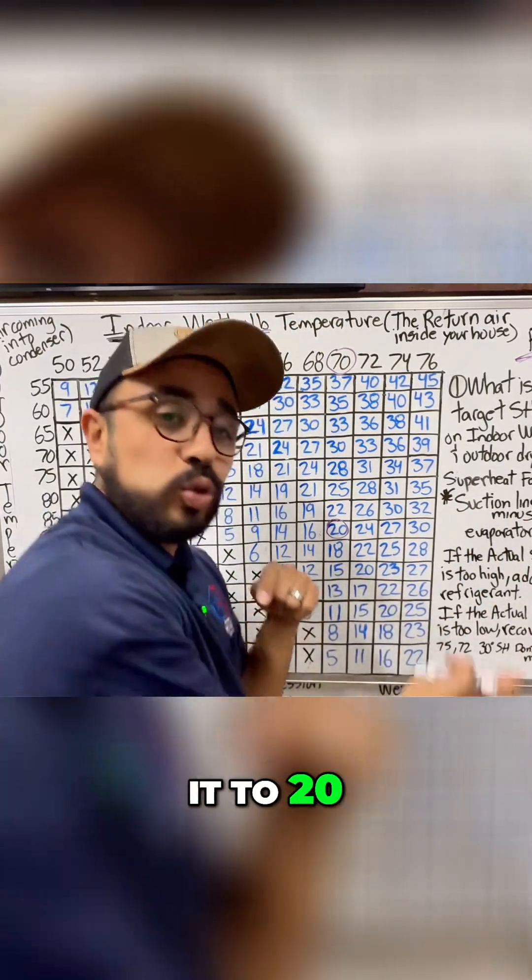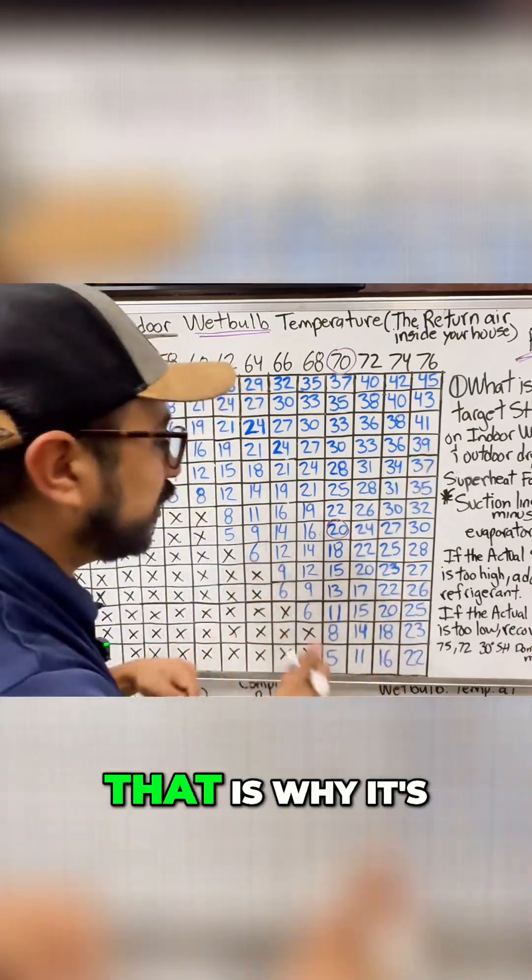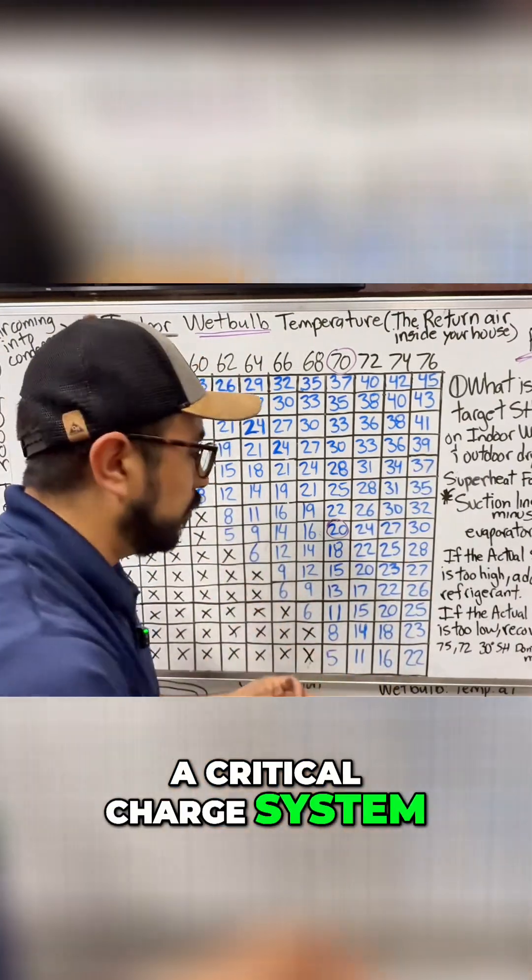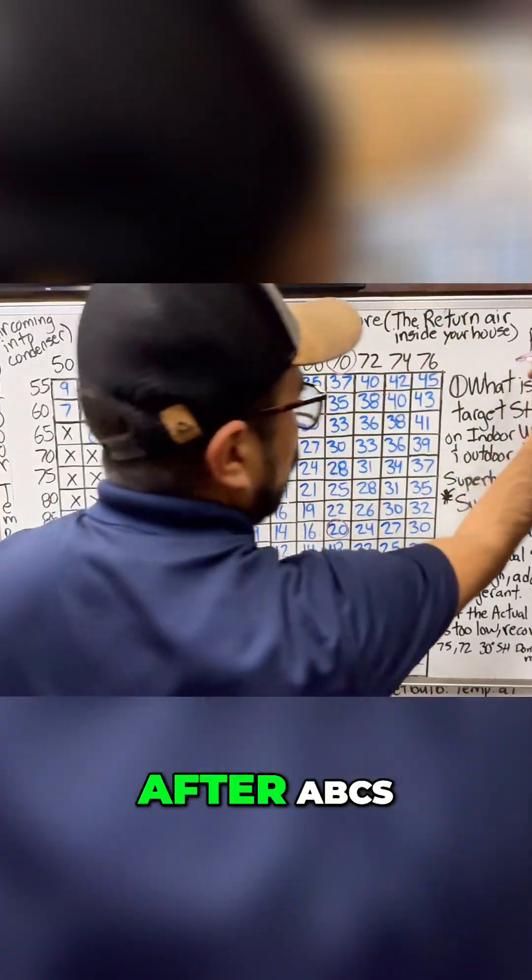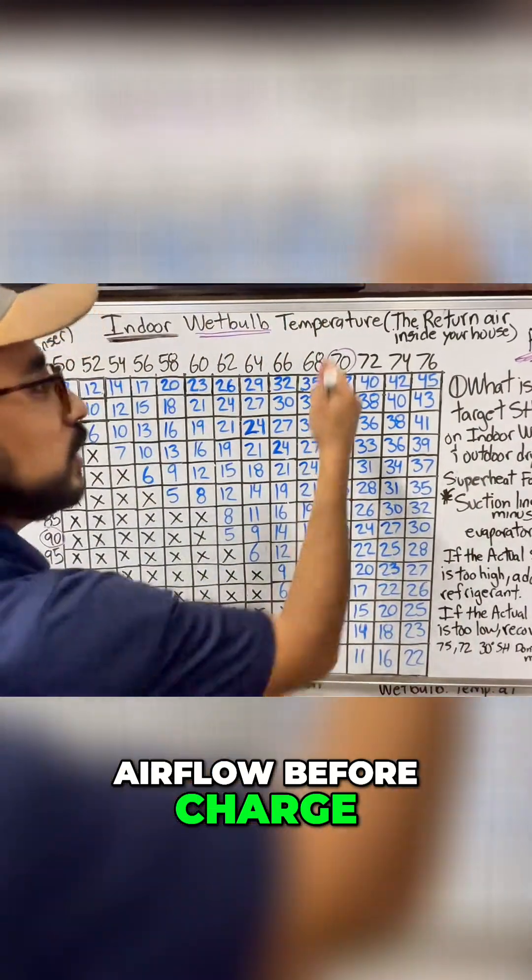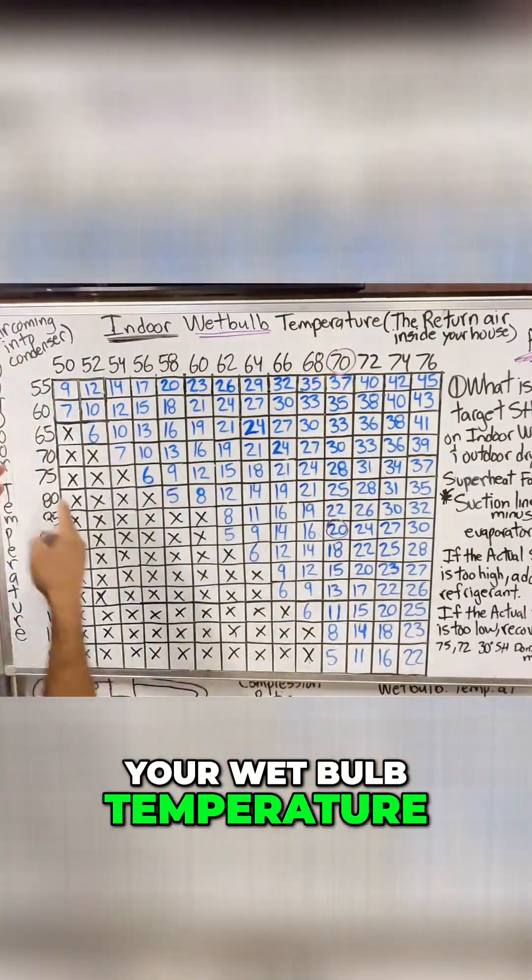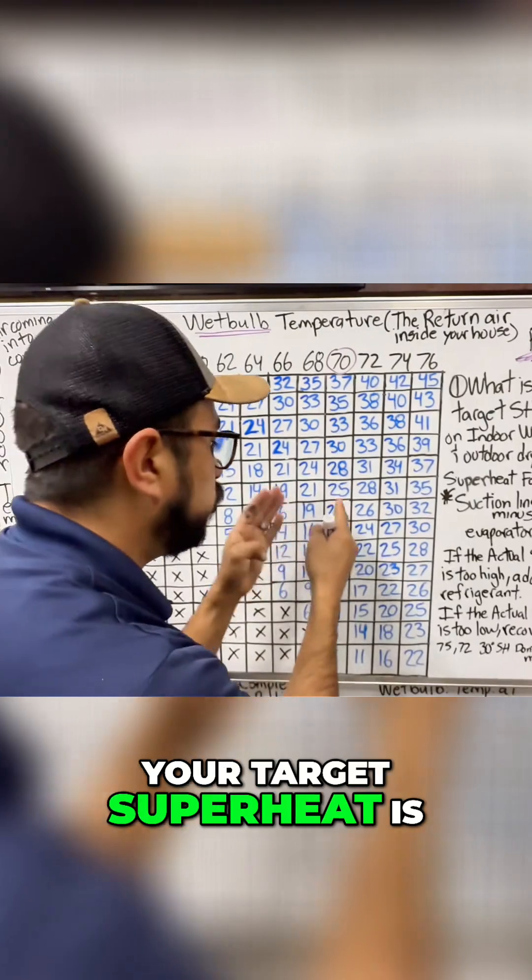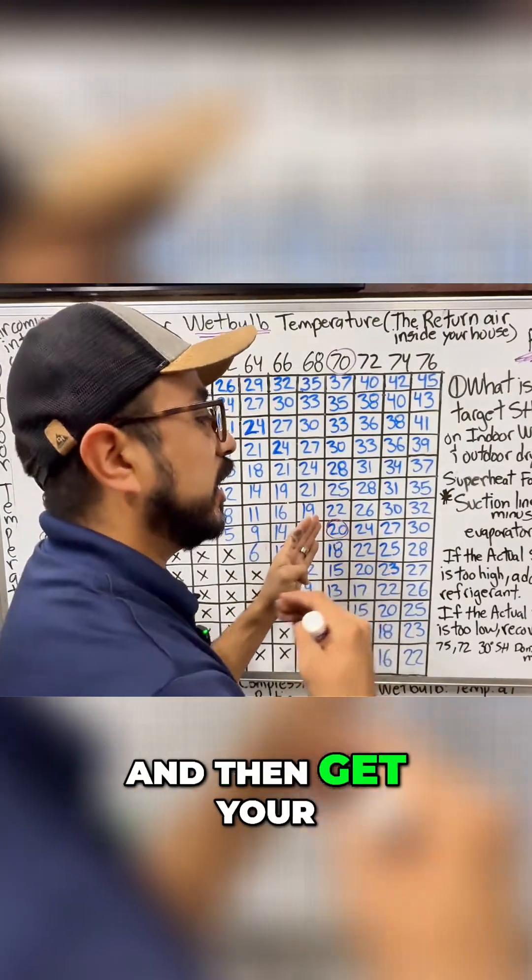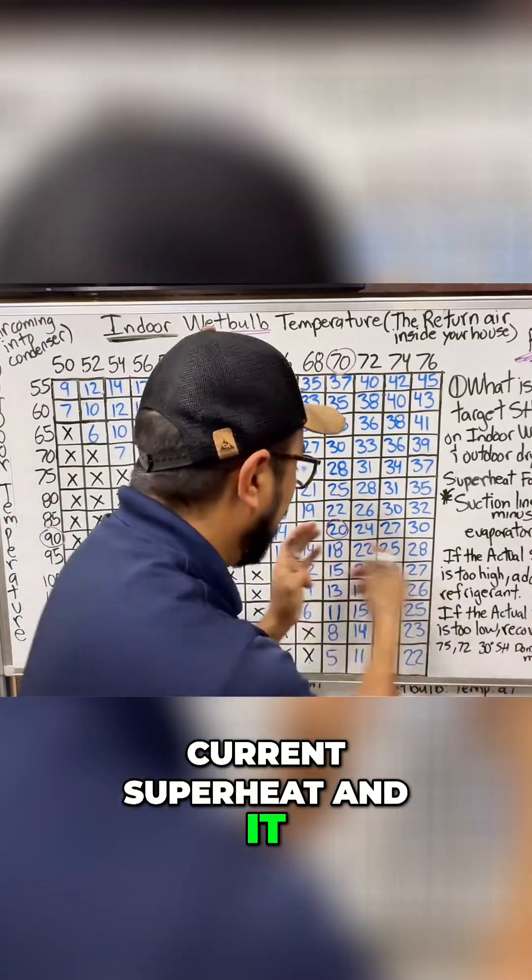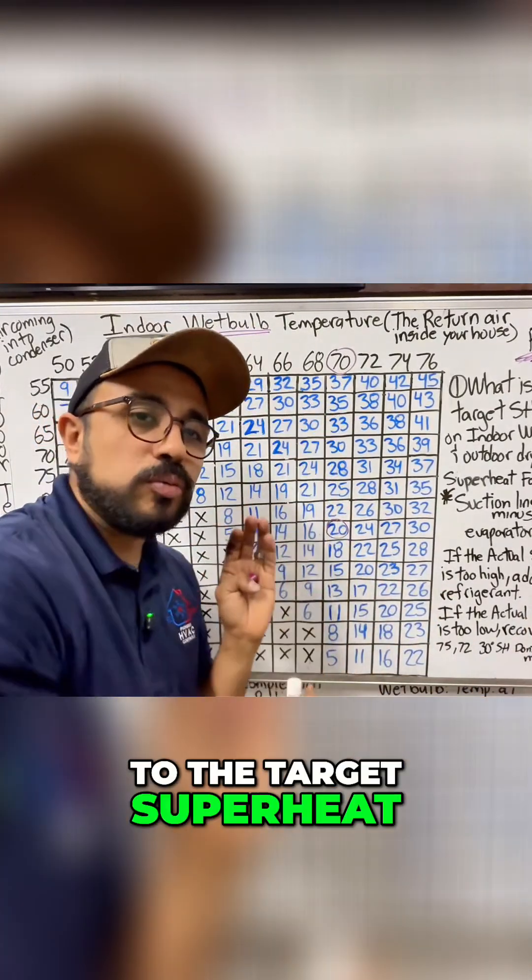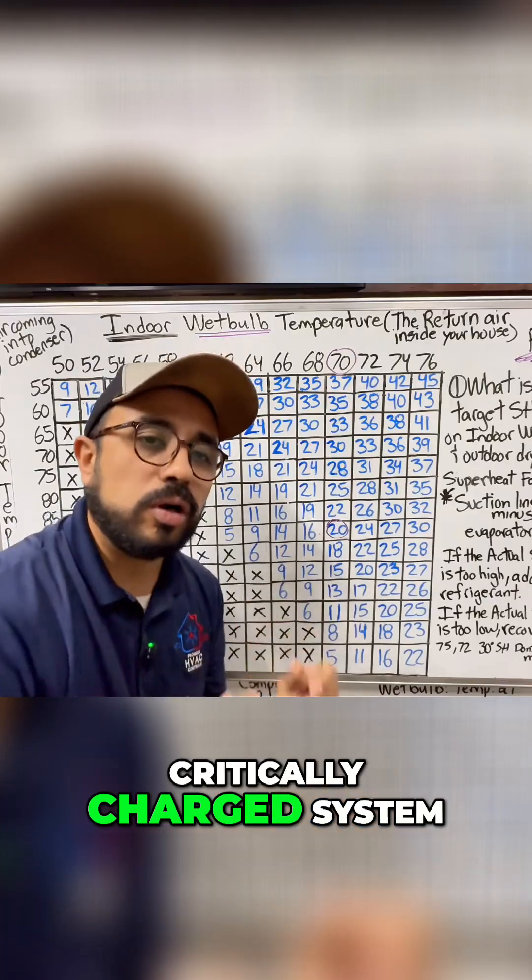That is why it's a critical charge system. You're gonna have to follow, of course, after ABC airflow before charge, your wet bulb temperature, your outdoor temperature where your target superheat is, and then get your current superheat. And it has to be close to the target superheat because it is a critically charged system.